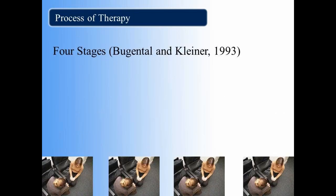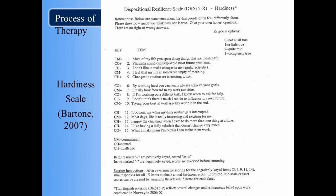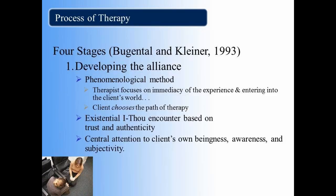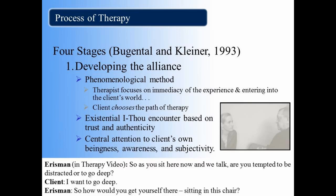The process of existential therapy involves four stages. Here is an example of an assessment tool called the hardiness scale, which the therapist can administer to clients at the outset of therapy to get a sense of how they find and make meaning in their lives. The first step in the therapeutic process is developing the alliance using the phenomenological method discussed earlier, creating an I-Thou encounter and focusing on the client's beingness, awareness, and subjectivity. Think about how Dr. Erisman developed the therapeutic alliance with Hannah in this week's therapy video, and consider the dialogue below that he used to help achieve this.